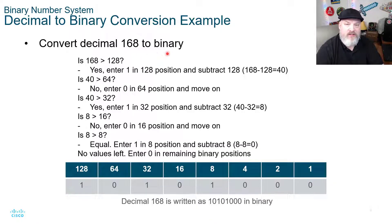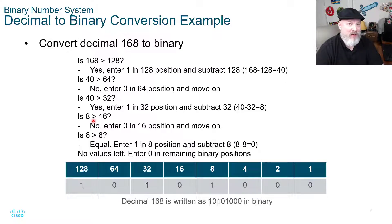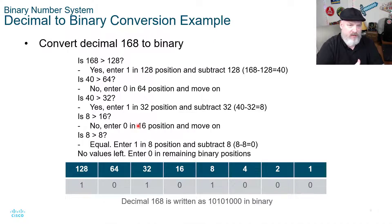Here's an example: converting decimal 168 to binary. Is 168 greater than 128? Yes. So we enter a 1 in the 128th place and subtract 128 from 168 — we have a remainder of 40. Is 40 greater than 64? No, so we record a 0. Is it greater than 32? Yes, so we put a 1 there and subtract 32 from 40 — remainder of 8. Is 8 greater than 16? No, so we put a 0. Is 8 greater than or equal to 8? Yes — so record a 1 there. 8 minus 8 is 0, so you have 0s in the remainder of the places.